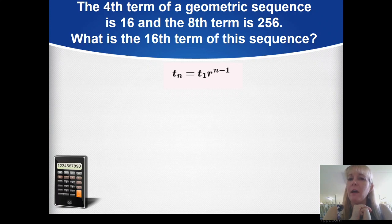This might seem difficult because we don't know the first term or the common ratio, and it's hard to work between two numbers without knowing the common ratio. So how do we find t₁ and r? We're going to solve this using simultaneous equations.